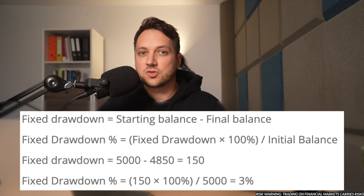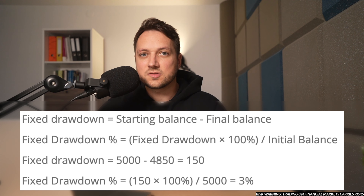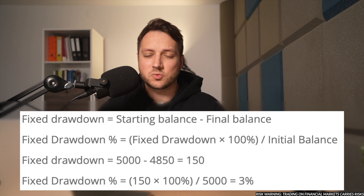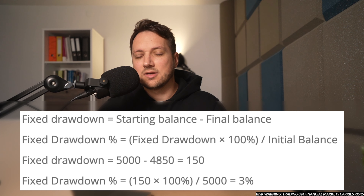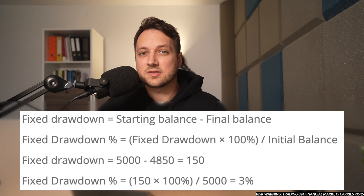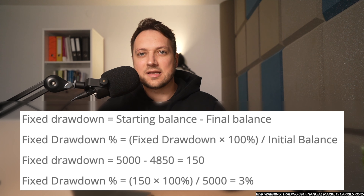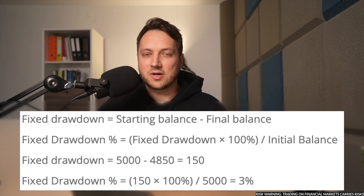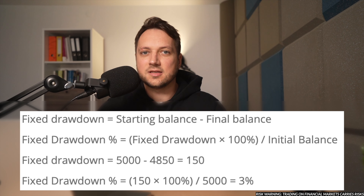After closing the trade, our balance decreases to $4,850. To calculate the fixed drawdown, the formula is: fixed drawdown = starting balance − final balance. As a percentage: fixed drawdown × 100% ÷ initial balance. In terms of money: $5,000 − $4,850 = $150. As a percentage: $150 × 100% ÷ $5,000 = 3%.